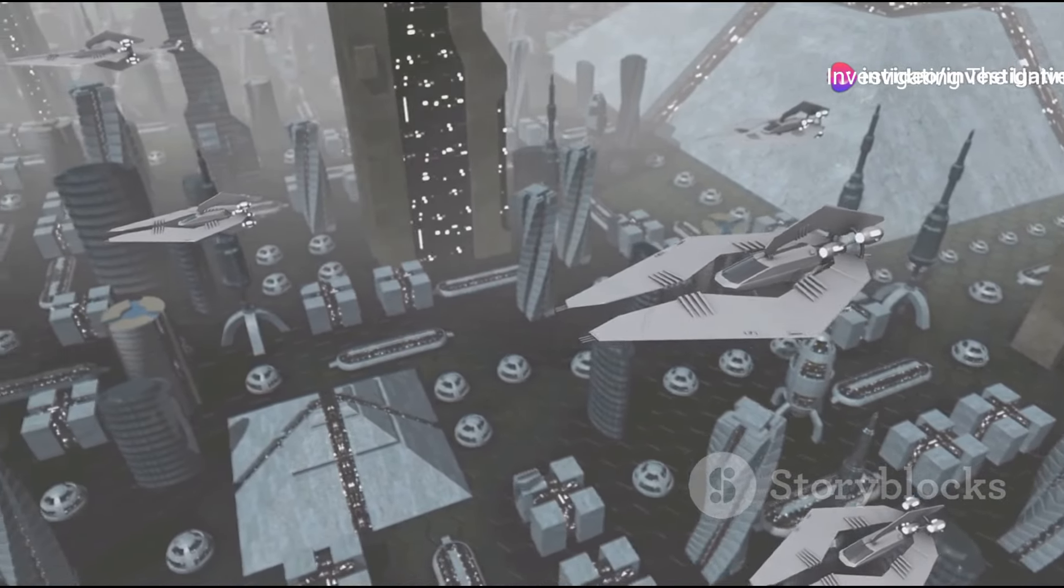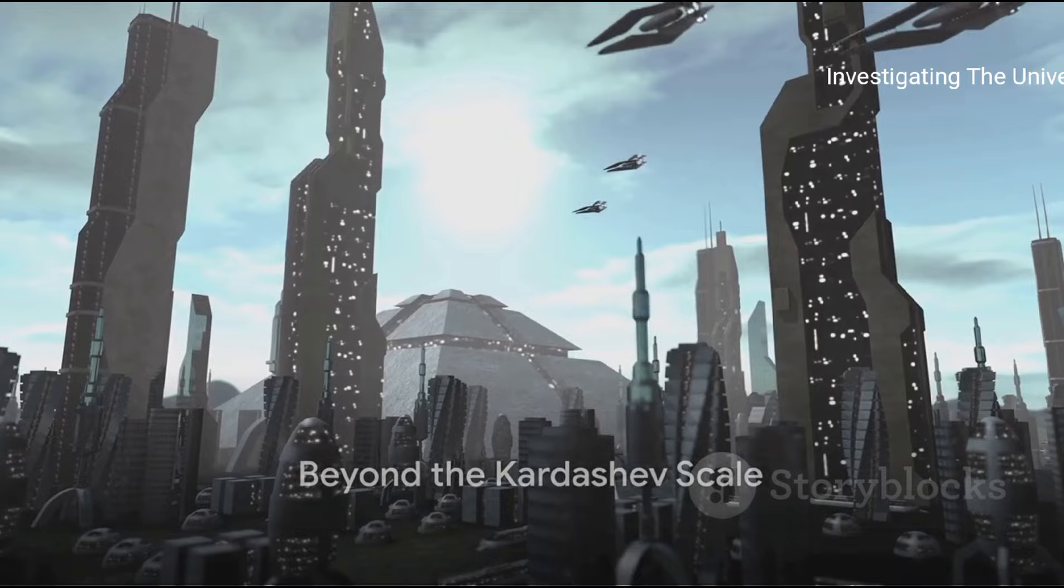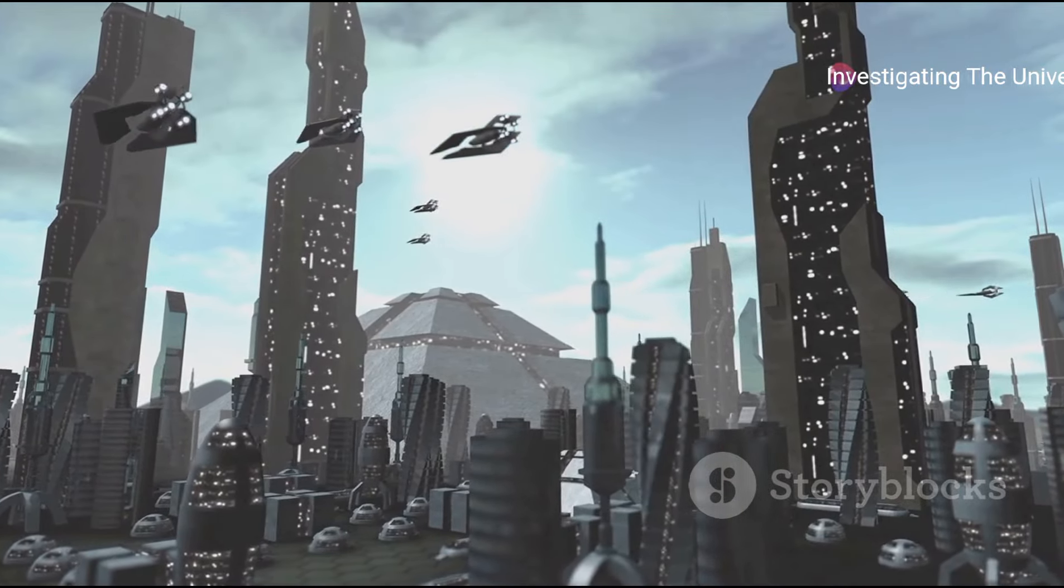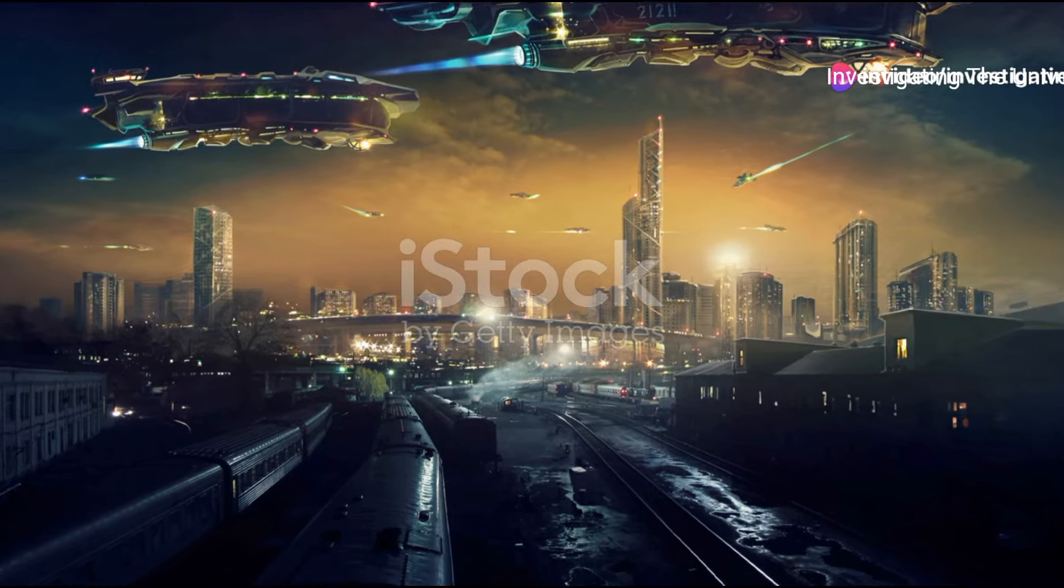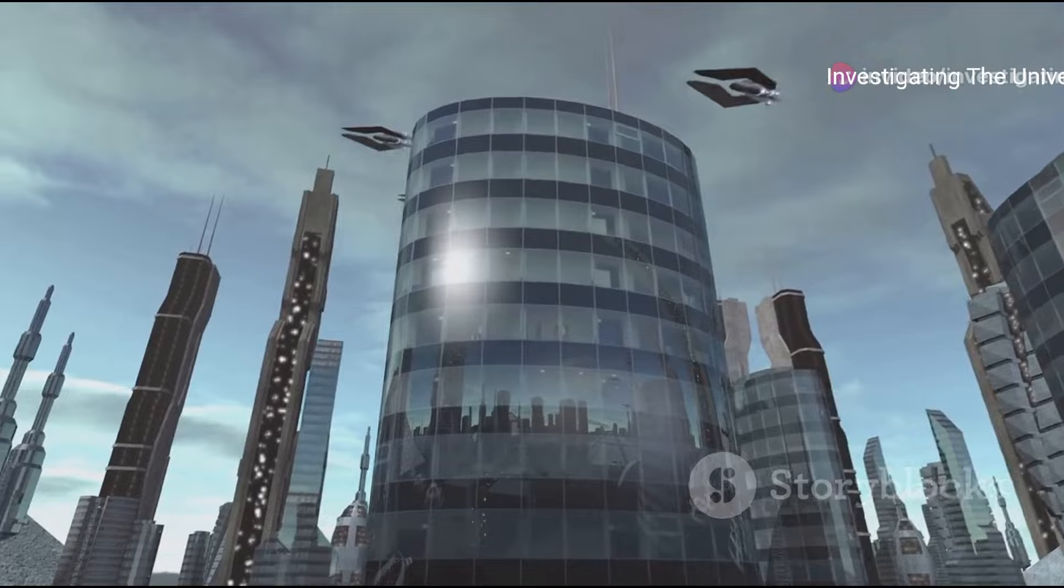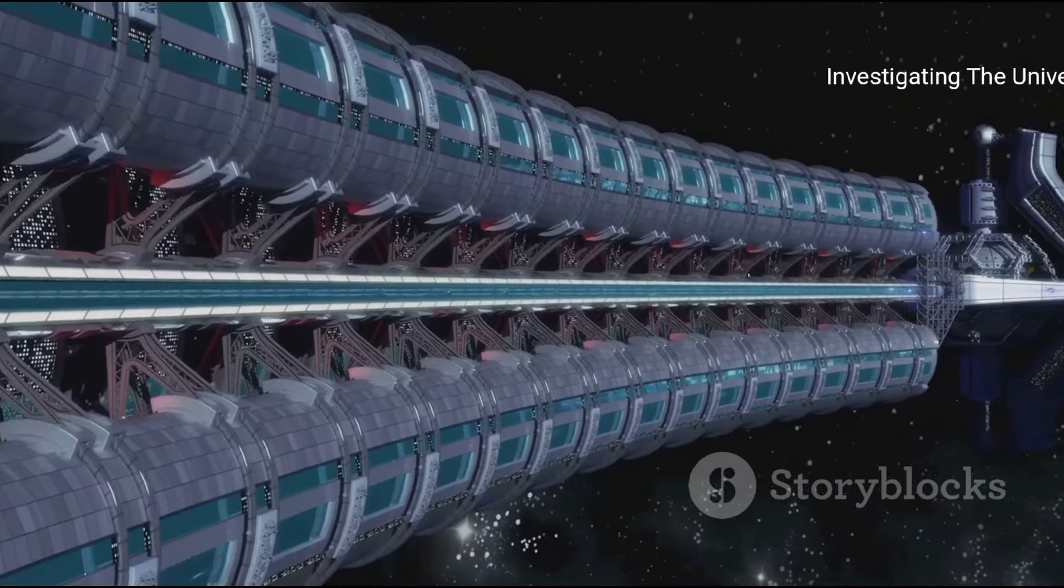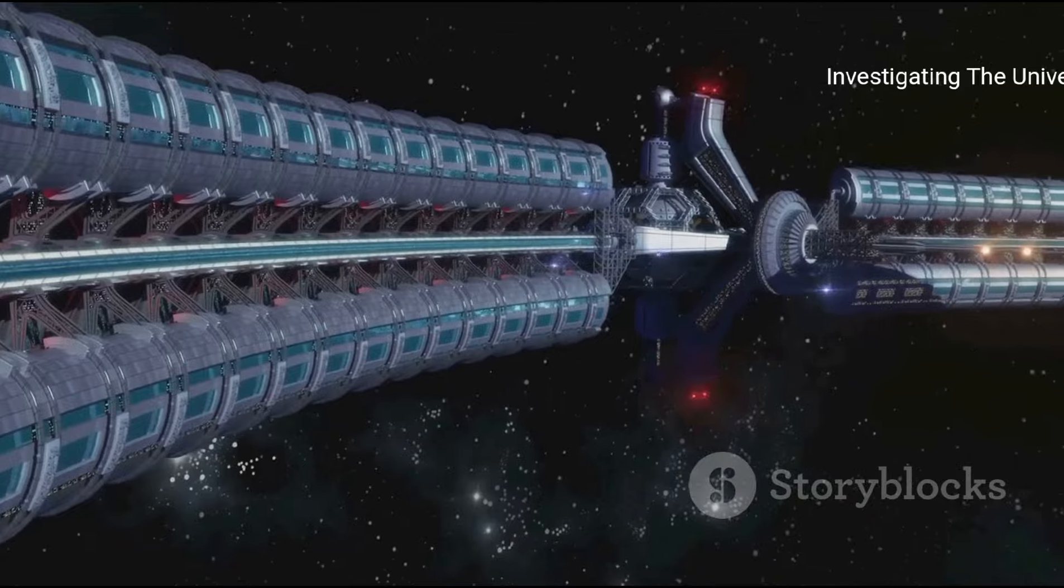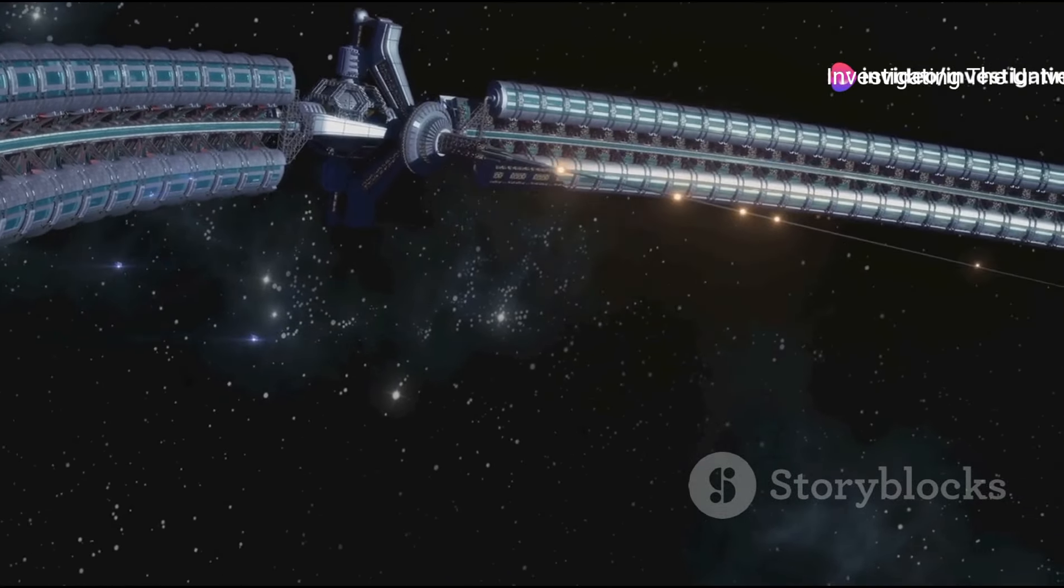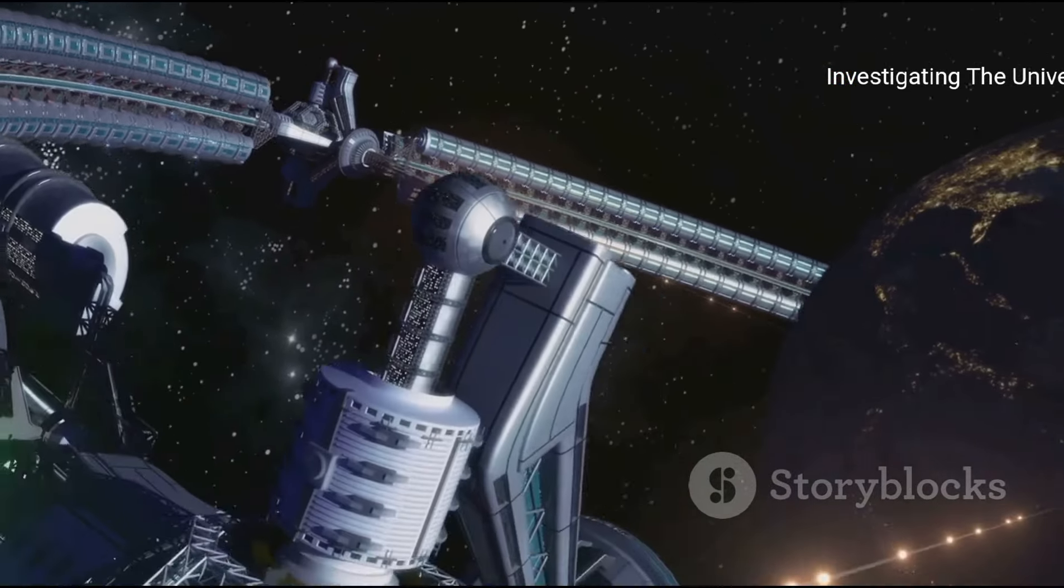To understand a Type VII civilization, we first need to look beyond the famous Kardashev scale. Originally envisioned by Russian astrophysicist Nikolai Kardashev in the 1960s, this scale was designed to categorize civilizations based on their energy consumption capabilities. It stretches from Type I, which harnesses the energy of its home planet, through Type II, which commands the power of its entire star, to Type III, which utilizes energy on the scale of its entire galaxy.